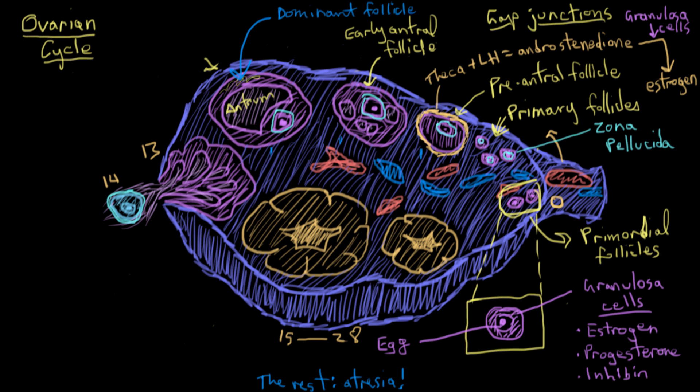So anyway, back to the development of the dominant follicle. It enlarges mostly due to the expanding antrum, as I mentioned earlier. And granulosa cells actually start to form this bit of a mound here that protrudes into the middle of the antrum. This mound of granulosa cells is called the cumulus oophorus. As part of the development of the dominant follicle, the cumulus oophorus and the egg sort of separate together from the wall of the follicle and float around in the middle of the antrum, like a little island.